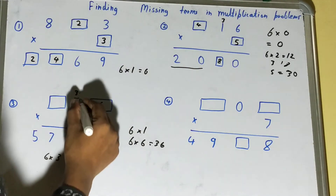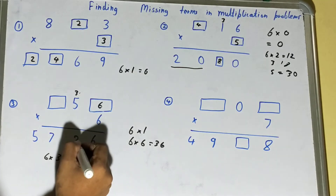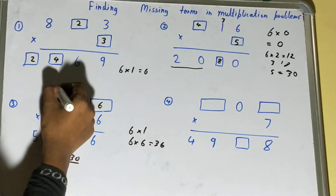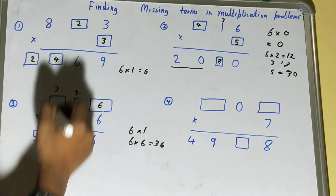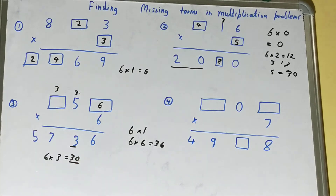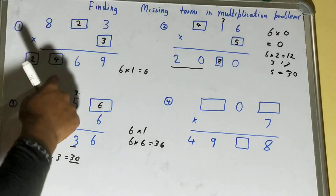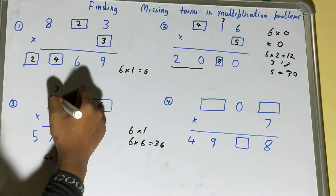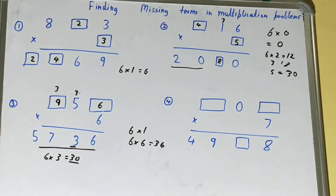Now we need to multiply six with something to get an answer where, with the three carry, we get 57. Six times nine is 54, and 54 plus three carry gives us 57. So our answer is 5736.